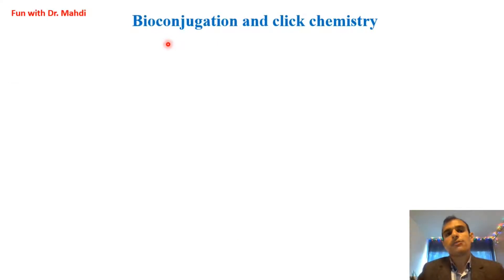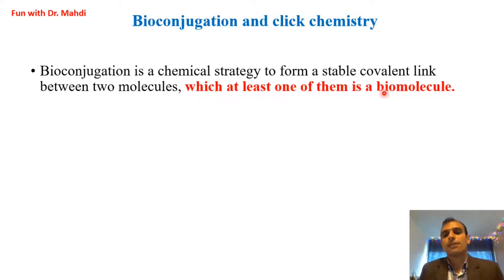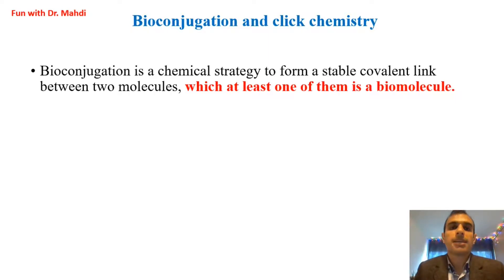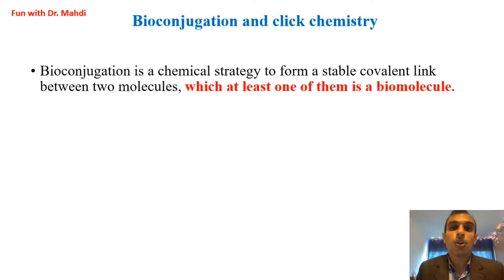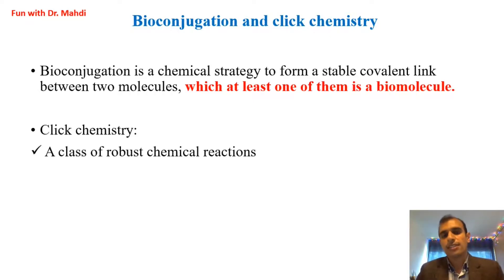First of all, I would like to give you a definition of bioconjugation. Bioconjugation is a chemical strategy to form a stable covalent link between two molecules, where at least one of them is a biomolecule. For example, if you have two molecules and you want to form a covalent bond between them, you can use bioconjugation. Note that at least one should be a biomolecule, or both could be biomolecules. For this purpose, we would like to use click chemistry reaction.